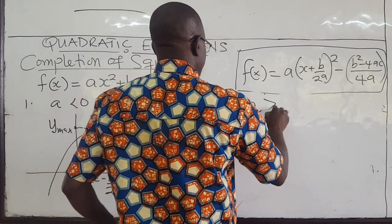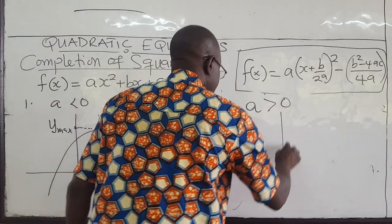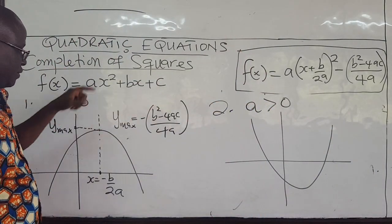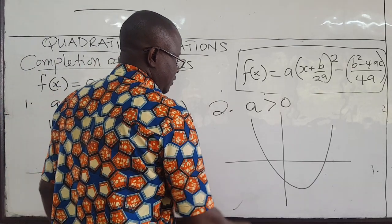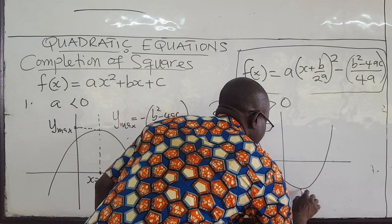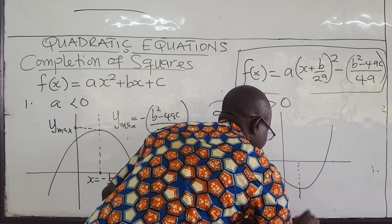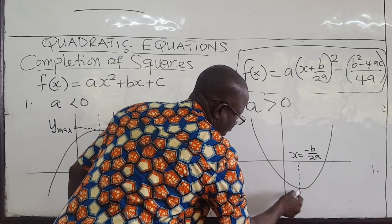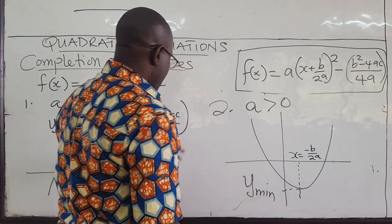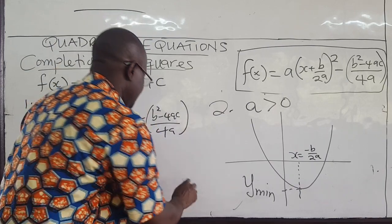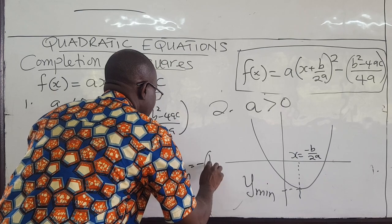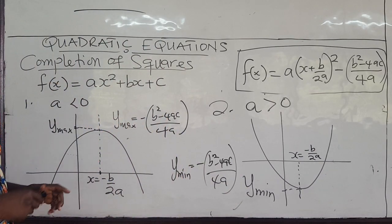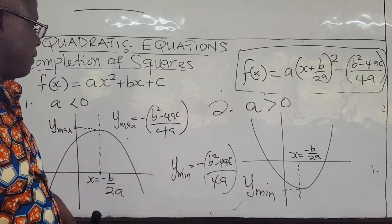If a is greater than zero, you're getting a minimum, and the parabola opens upward. The line of symmetry is still x equals negative b over 2a, and y-min is given by the same expression: negative b squared minus 4ac all over 4a. These formulas are important for quadratic equations and their graphs.